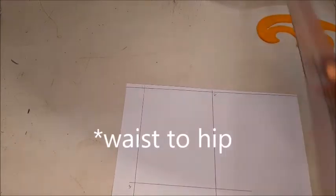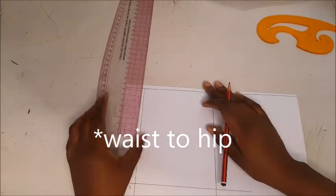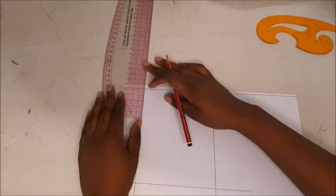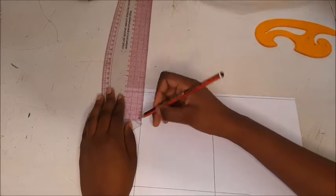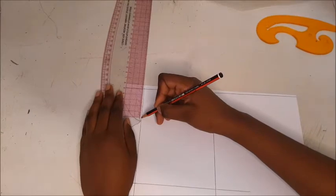Take your hip measurement and square across from one, which your hip measurement is 20.6 centimeters. And that line that you have squared across is going to be line five and six.